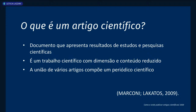O que é um artigo científico? Ele vai compilar e apresentar os resultados de estudos e pesquisas científicas — é um trabalho científico em dimensão e conteúdo reduzido. Temos teses, dissertações e TCCs, que são trabalhos mais extensos. O artigo é basicamente isso, mas em um formato menor. A partir da união de vários artigos, a gente compõe um periódico científico, e tão importante quanto fazer a pesquisa é publicá-la em um periódico onde o trabalho será avaliado pelos especialistas da área.